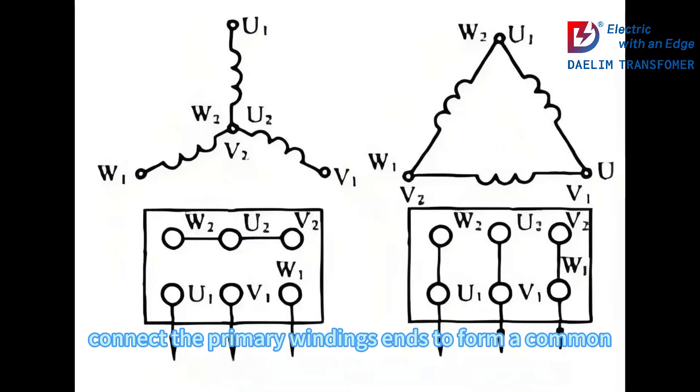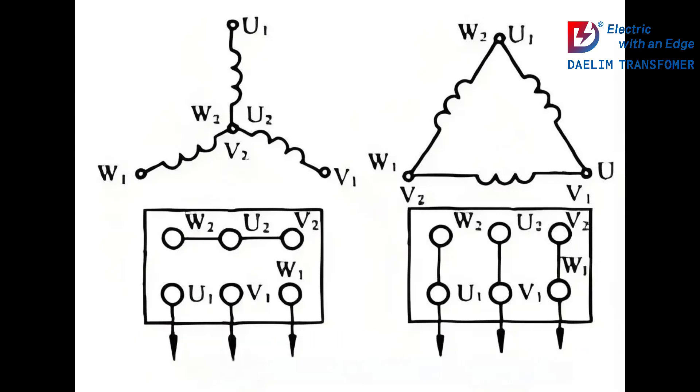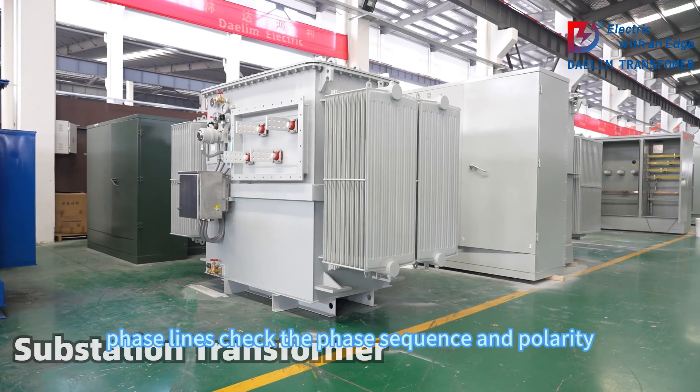For a Y connection, connect the primary winding's ends to form a common neutral point. Repeat this for the secondary windings and connect the other ends to the respective phase lines.